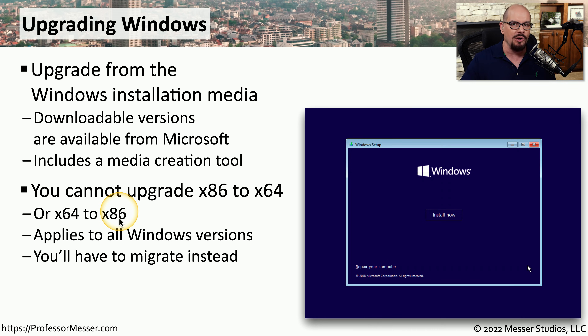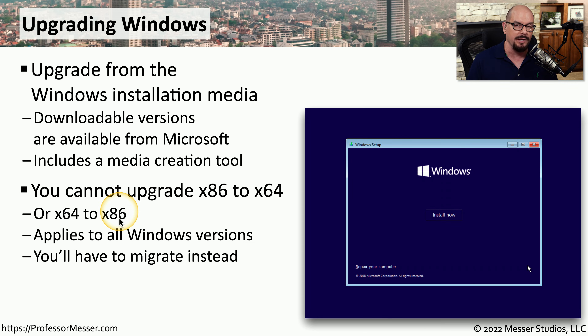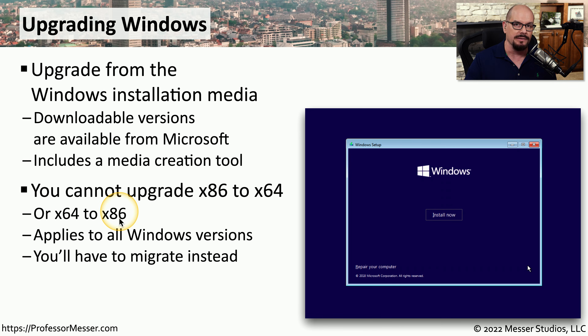This applies to all Windows versions across all Windows editions. If you do need to upgrade between a 32-bit and a 64-bit version of Windows, you'll need to back up all of your files and perform a clean install.